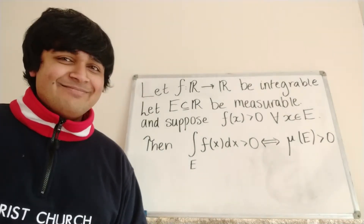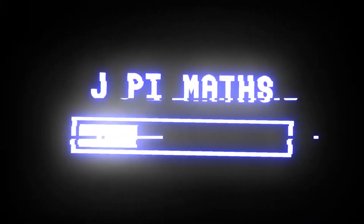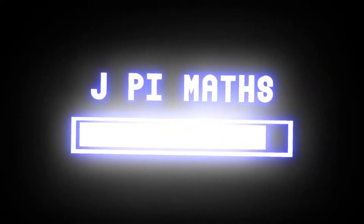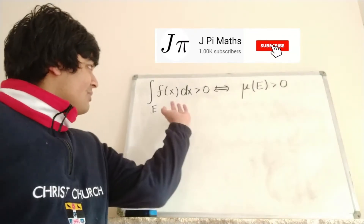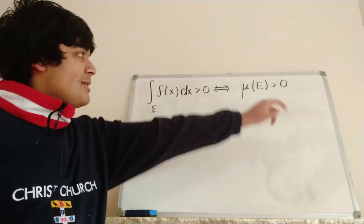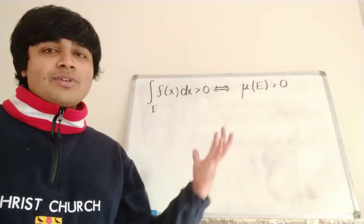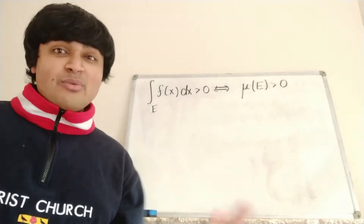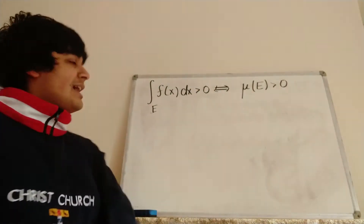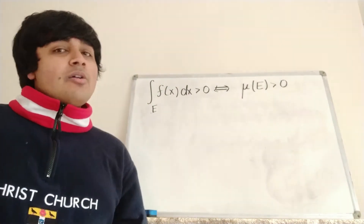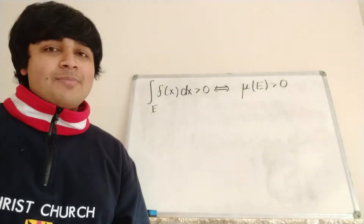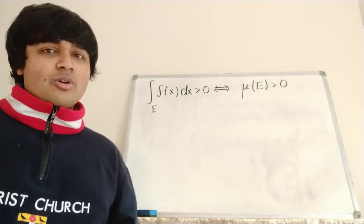Let's get stuck in. So this is what we want to prove: that the integral of f is bigger than zero if and only if μ(E), the measure of E, is bigger than zero. One direction is quite straightforward so I'm just going to do that first, and that's going from left to right. So if we have that the integral on E of f(x) dx is bigger than zero, then the measure of E must be bigger than zero, and I want to prove that by the contrapositive.